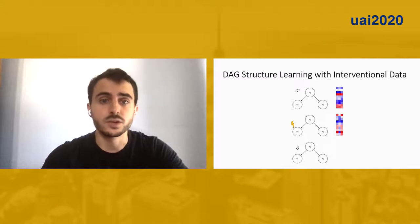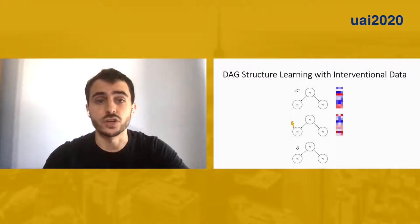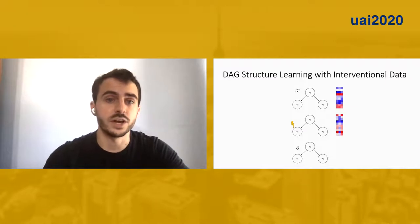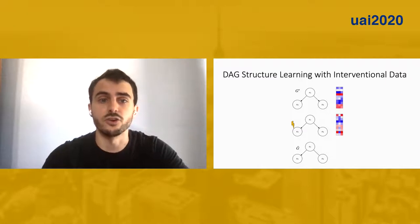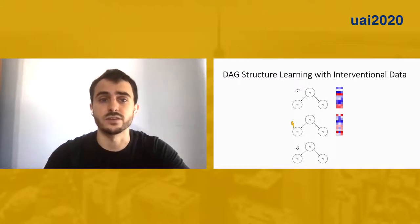As a simple example, consider a dataset derived from the causal model G star consisting of observational data as well as data generated from an intervention on X2. Throughout this talk, we'll be using the notion of a soft intervention, which does not require that its target be set to a given value or even that we cut off the dependence of a target on its parents, which is called a hard intervention. Rather, a soft intervention, or mechanism change, only requires that its target's conditional distribution given its parents is altered. This notion of intervention subsumes the notion of a hard intervention and is more realistic for settings such as biology.